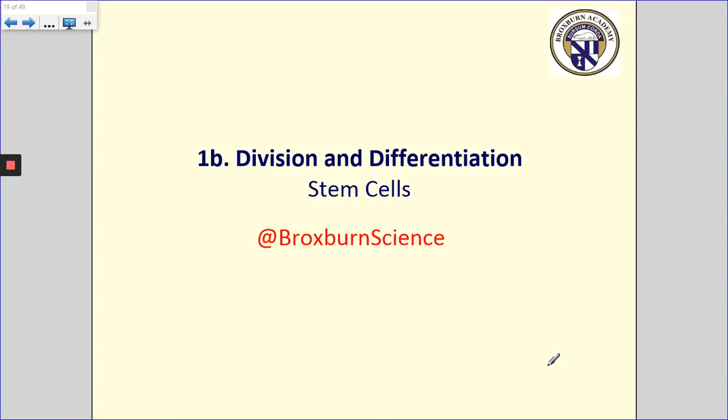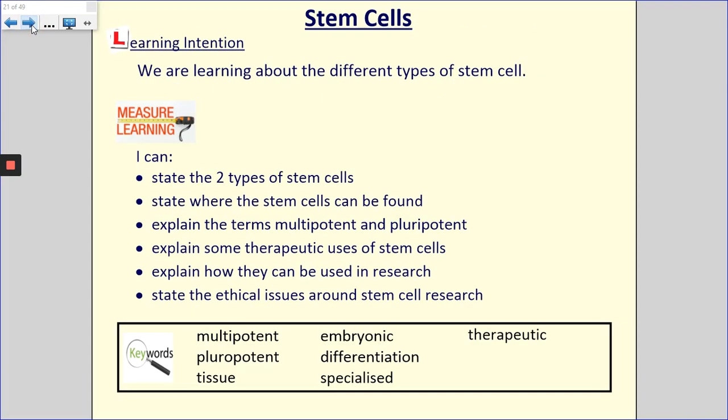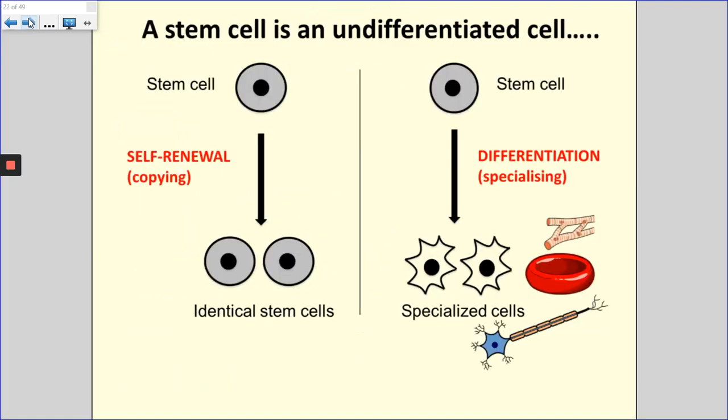This lesson is about stem cells. You've already learnt about how unspecialised cells become specialised - we've talked about this process of differentiation. We're going to learn a little bit more about stem cells and their different types, and how we can use them in science. Have a look at this screen and read through the success criteria - this is what you should be able to do by the time you finish this video.